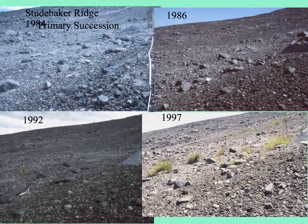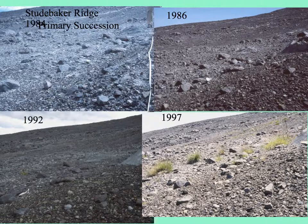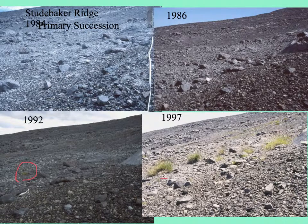At Studebaker Ridge, where primary succession took place: the blast was in 1980, and you can see in the upper left picture there's nothing but bare rock and rubble. In 1986, there's no green. By 1992, maybe a little bit of greenery starting to show up where moss spores have taken hold. And then 1997 — almost 20 years later — you can see shrubby plants starting to grow.